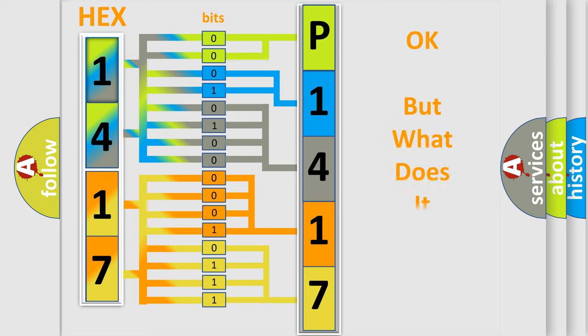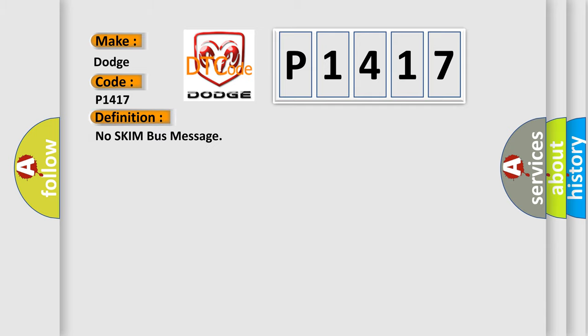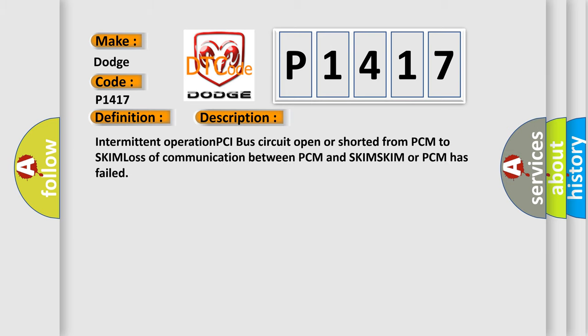The number itself does not make sense to us if we cannot assign information about what it actually expresses. So, what does the diagnostic trouble code P1417 interpret specifically for Dodge car manufacturers? The basic definition is: no SKIM bus message. This is a short description of this DTC code: intermittent operation, PCI bus circuit open or shorted from PCM to SKIM, loss of communication between PCM and SKIM, or SKIM or PCM has failed.